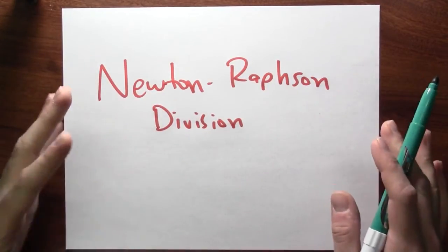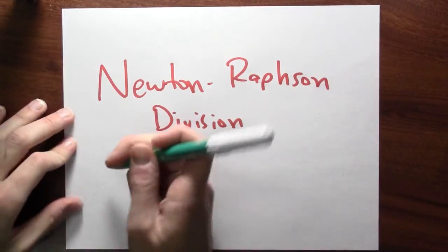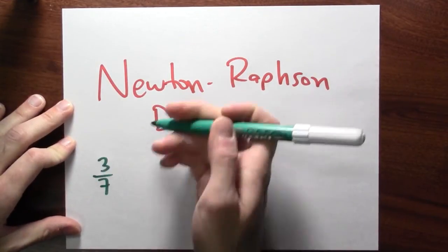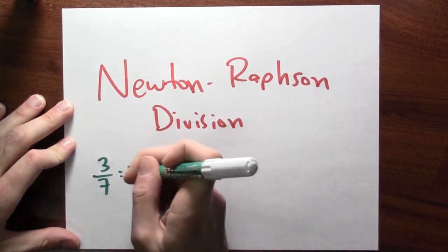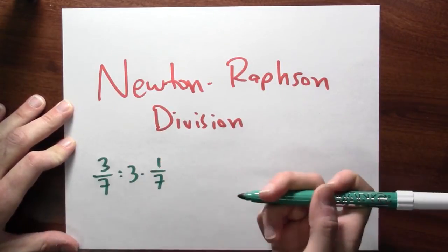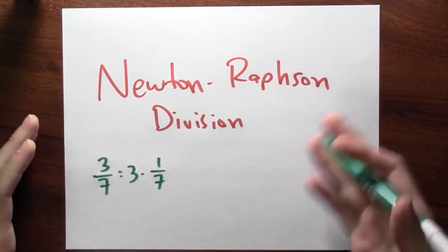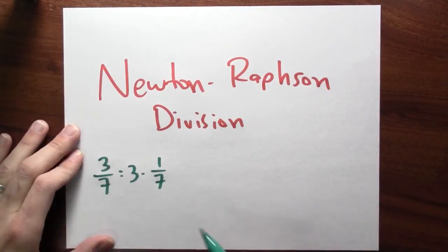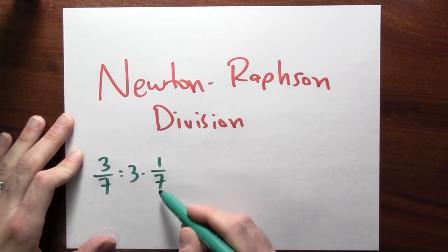But if you can find reciprocals and you can multiply, you can do division in general, right? If you wanted to approximate 3/7 using this technique, well, you just point out that 3/7 is 3 times 1/7, right? And imagine that you can multiply, add, subtract, but the division is hard. Okay. Well, a moment ago we approximated 1/7,